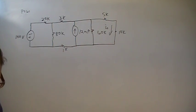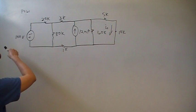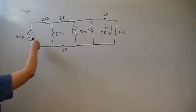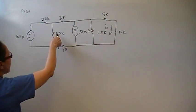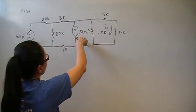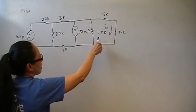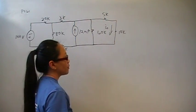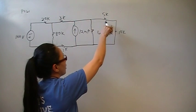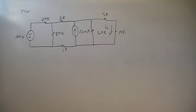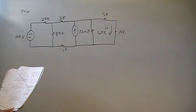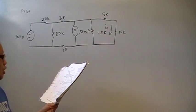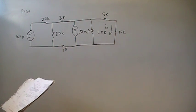This problem is number 61 from Chapter 4, from the section on source transformations. We have a circuit with an independent 100-volt voltage source in series with 20K, 80K, 1K, and 3K, all connected in parallel with a 12-milliamp independent current source, which is parallel connected to 60K, 15K, and 10K. We're looking for I0, which goes through the 5K and 10K branch. The problem says to find the current in the 10-kilohm resistor by making a succession of appropriate source transformations.